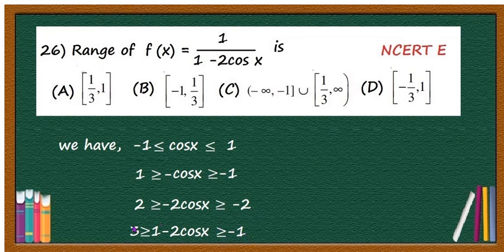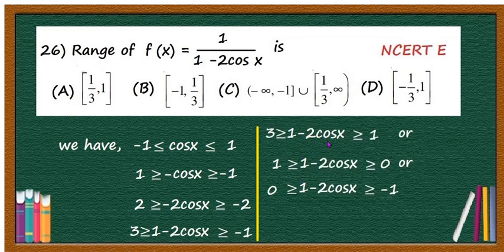We can write this as three intervals. That is, 1 - 2cos x lies between 3 and 1, or it lies between 1 and 0, or it lies between 0 and -1. After writing like this, we can take the reciprocal of each interval and come to a conclusion.